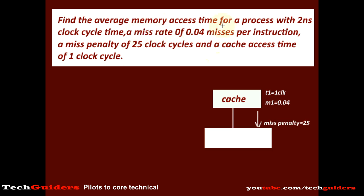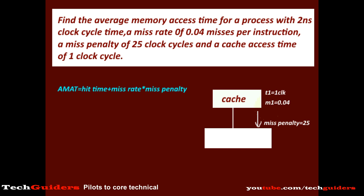We have to find the average memory access time. We have the miss penalty, hit time, and miss rate, so we need not consider hierarchical or simultaneous access — we can use the general equation: hit time plus miss rate times miss penalty.